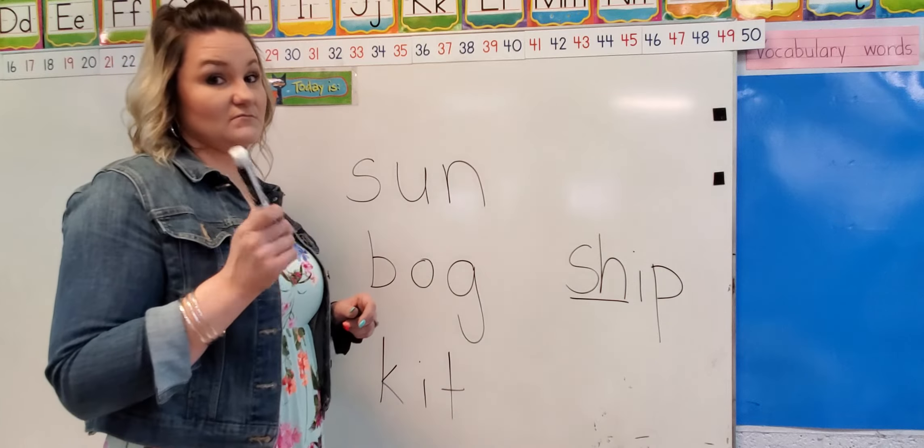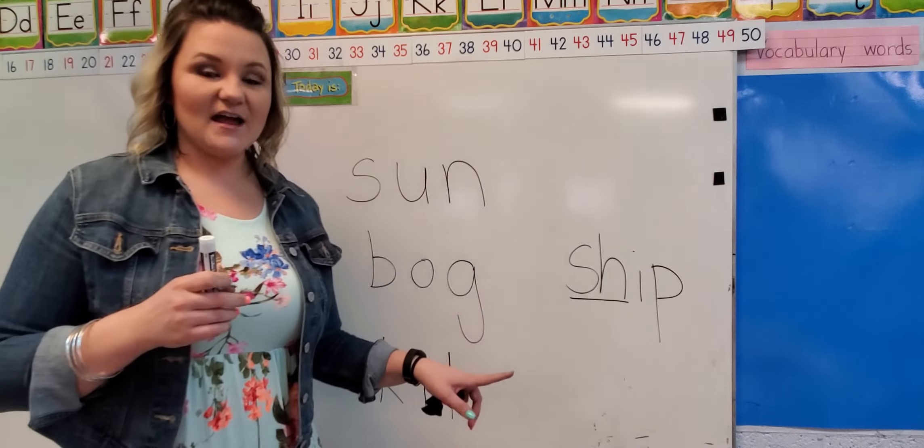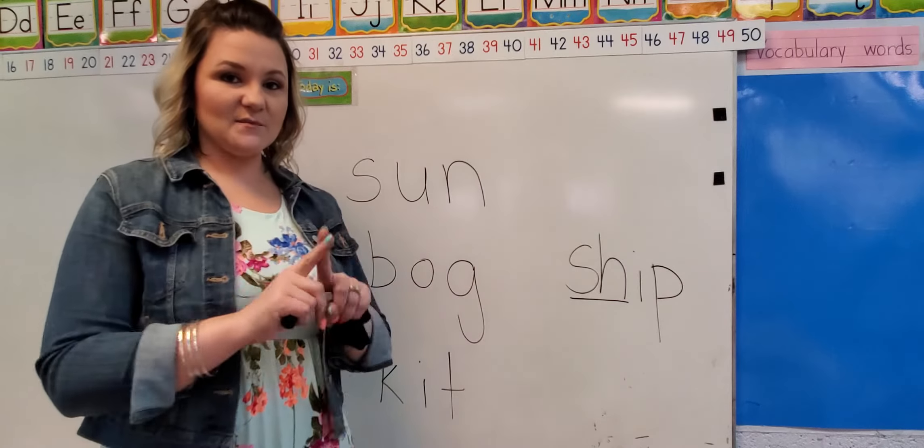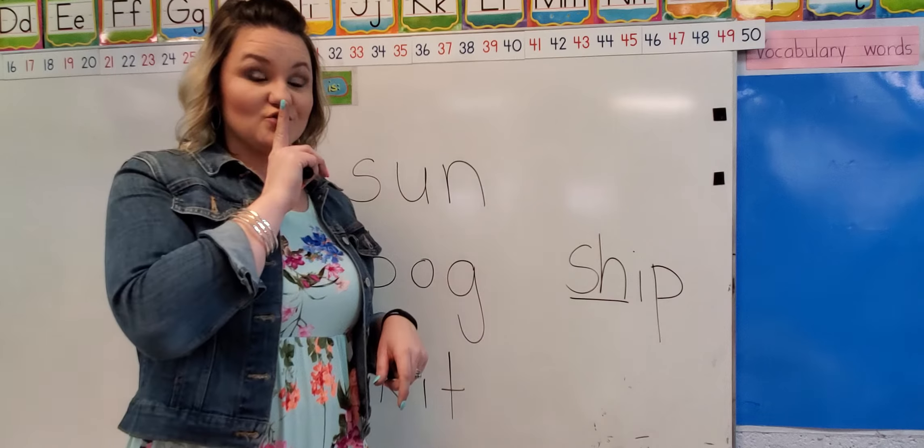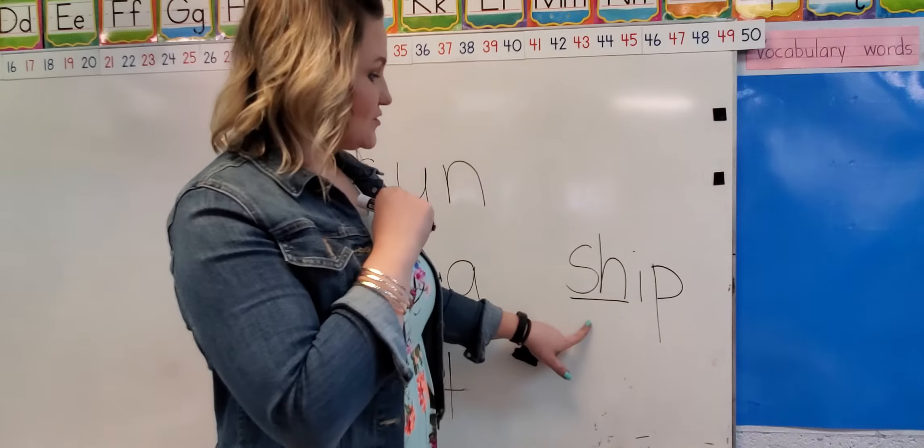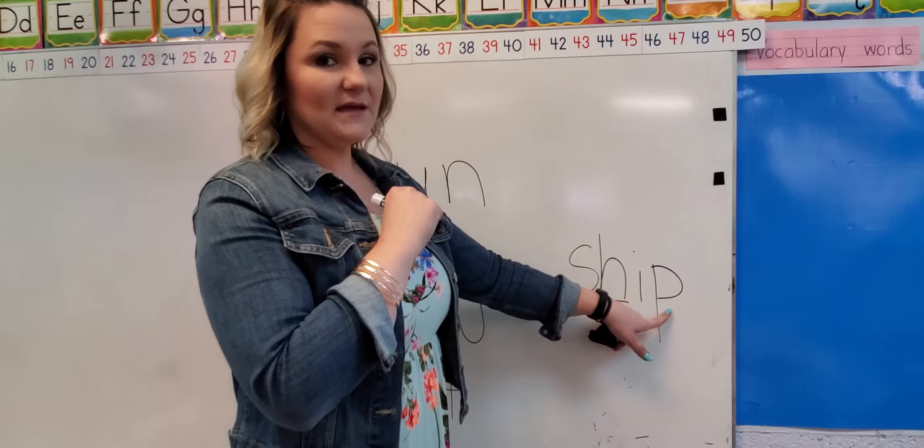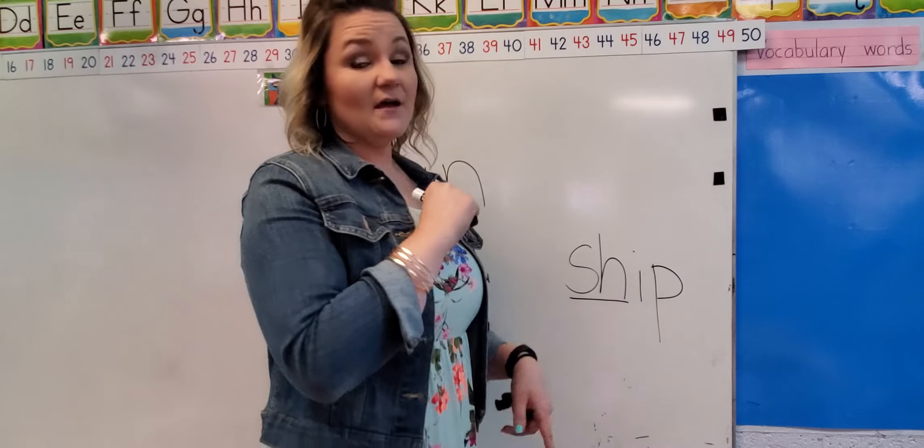Now I've got a hard one. I'm going to try to trick you. Are you ready? S, H is a digraph. Do you remember what S, H says when it's together? It's where two letters come together to make one sound. Sh, S, H, ship. So, Sh. What sound does an I make? I, and then a P. Sh, I, P. Ship.